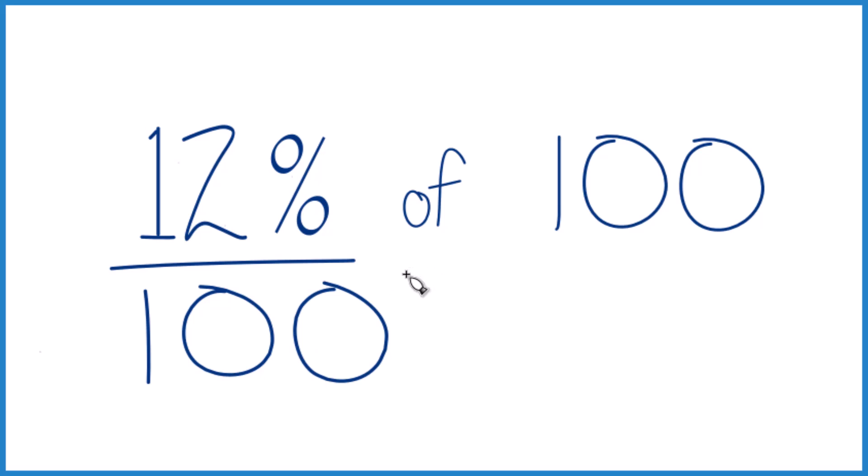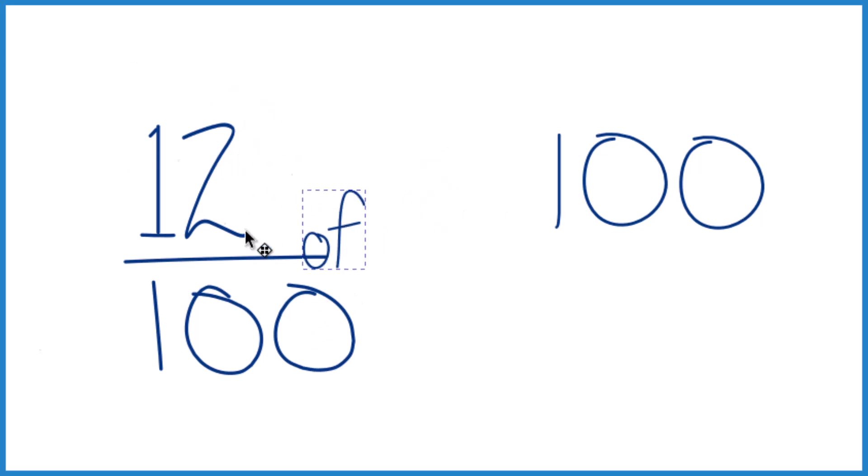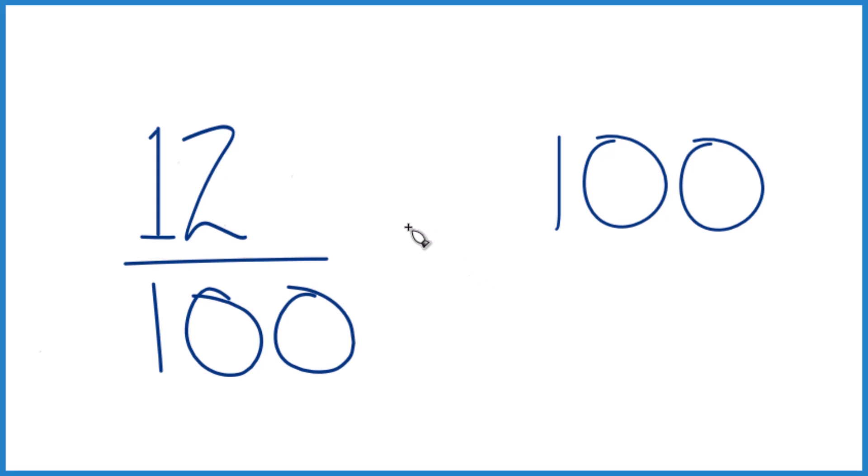You could also think about it this way. So we said 12%, that's 12 per 100. Let's get rid of the percent here, and then instead of 'of', we can just call this multiplication. So 12 over 100 times 100. And instead of 100, let's call it 100 over 1. It's still 100—we're dividing by 1, but everything lines up real nice.